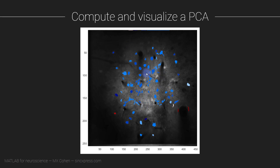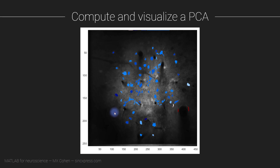This visualization is really insightful because you can see that pretty much all of the somas — all these cell bodies — are weighted in one direction, whereas this blood vessel artifact here is weighted very strongly in the other direction, as well as this small cluster here. I don't know whether this corresponds to a small cell body or another artifact, but given that it is strongly correlated with these two artifacts and negatively correlated with all these cell bodies, I suspect this is an artifact as well.